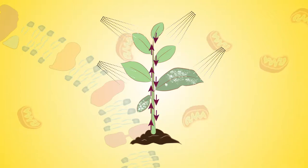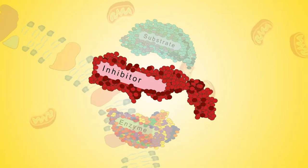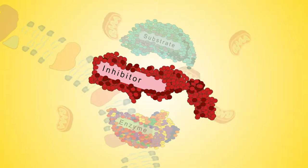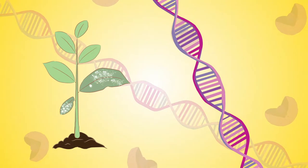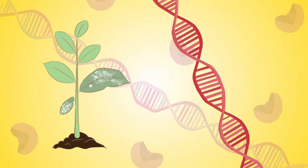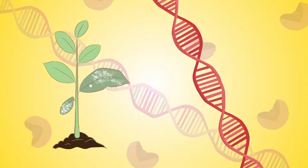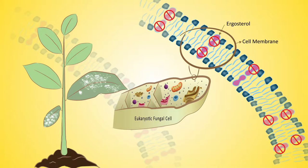Inhibitors of enzymes break down and disrupt or inactivate the structure of proteins and enzymes, leading to a loss of function. Inhibitors of nucleic acid metabolism and protein synthesis stop cells from dividing at the nuclear level, preventing RNA or DNA from constructing.